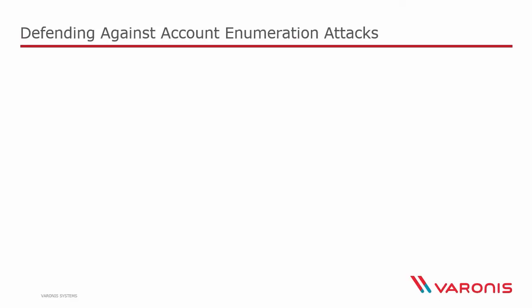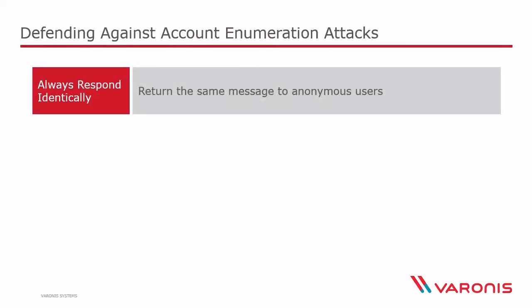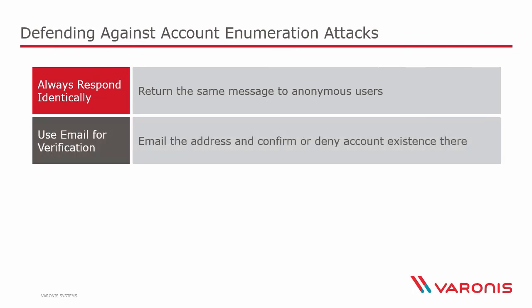There are a few things we can do to mitigate the risk of account enumeration. The first is to always respond in an identical fashion. A good response is something like 'an email has been sent to you.' If someone has an email on the system, that email begins the password reset process. If they don't have an account, the email might say something like 'you don't actually have an account on this site — perhaps you created it under a different email address, or if you didn't have an account at all you might like to register.' That mechanism uses email as the verification channel.